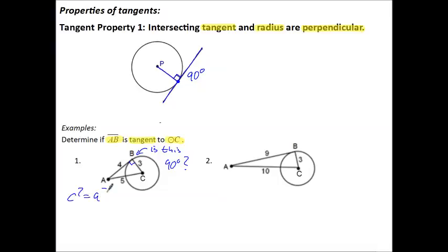C squared is equal to A squared plus B squared. And the hypotenuse, the side that is across from what's supposed to be our right angle. So 5 squared is equal to 3 squared plus 4 squared. 25 is equal to 9 plus 16. 25 is equal to 25.